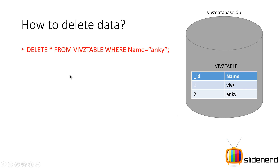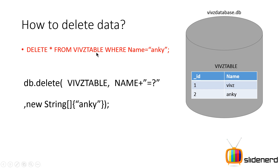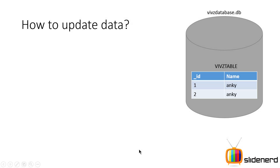Now let's look at how to delete data in practice. The SQL query looks like: DELETE FROM vips_table WHERE name = 'Anki'. In code you'd call db.delete(), pass the table name, then in the WHERE clause write name equals a question mark, and in the third argument — the WHERE args — supply the string array containing 'Anki'. Note that you do not write the word WHERE yourself in the second argument; it is automatically added by the underlying SQLite mechanism.